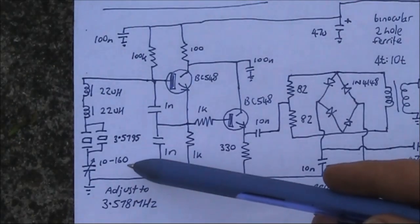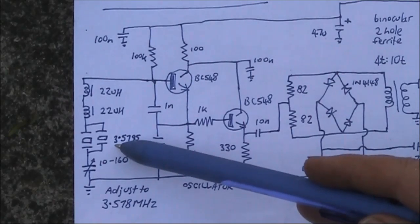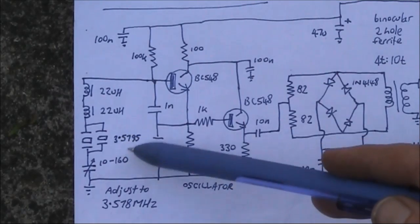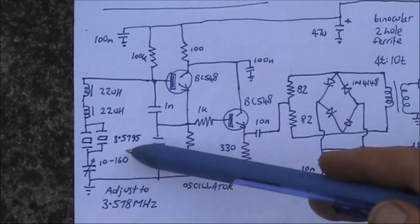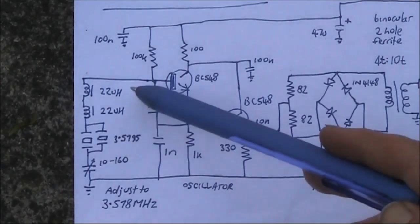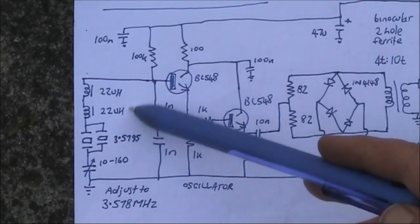You can see the local oscillator here, the two crystals in parallel. I do that to allow a larger pulling range because we don't want to be exactly on 3.579545. Instead, we need to be about 1500 hertz lower. So to pull the frequencies down, we have two inductors in series. Both are 22 microhenry. You may need to experiment with those in practice.